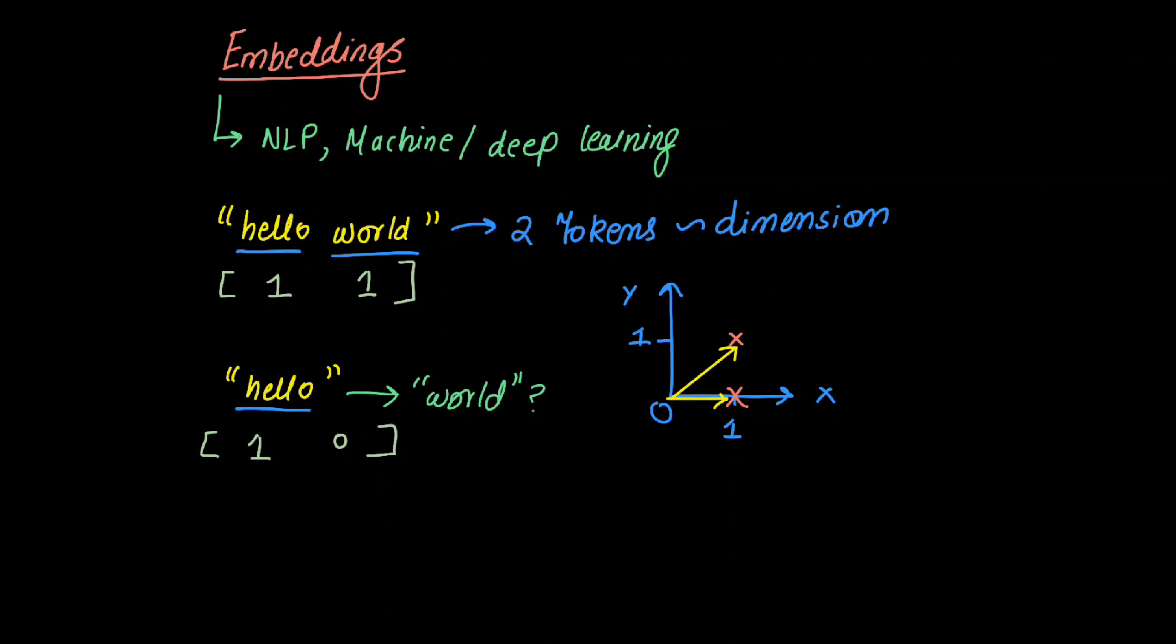But obviously it's hard to visualize or think about dimensions more than three. But mathematically it's possible, and if we can represent two tokens or two dimensions within the plane, then we can definitely represent n dimensions within the plane as well. So this is the concept around embeddings - that you actually represent them as vectors.